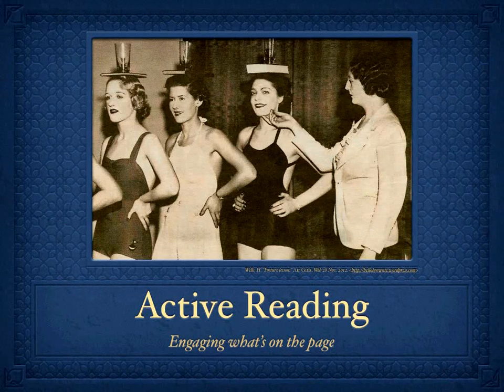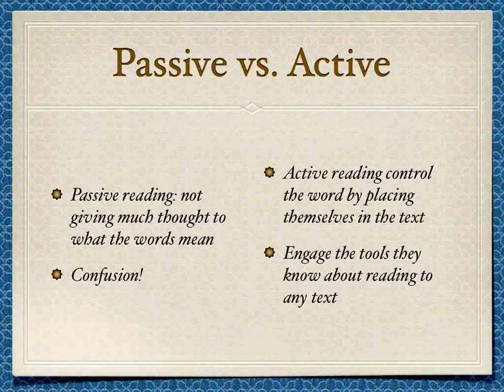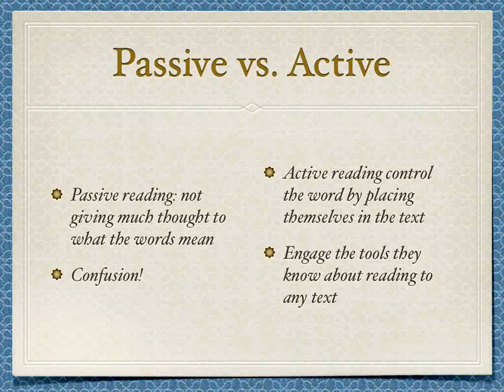Today we're looking at active reading strategies. As a reader, you have two options: you can read passively or actively. A passive reader is not giving much thought to what the words mean, and that leads to a lot of confusion. On the other hand, the active reader controls the words by placing themselves into the text. They're using the tools they have learned to engage the text itself, and each step of reading involves a strategy.